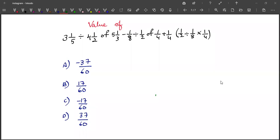The answer for this question is option A, minus 37 over 60. Let's do it.